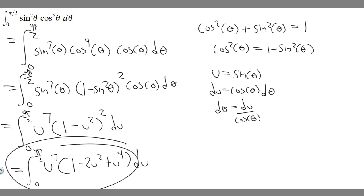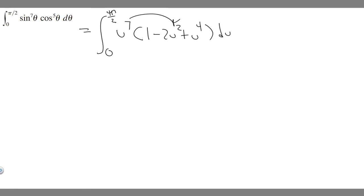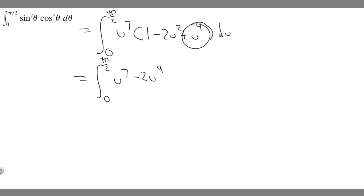Now we multiply u⁷ through: u⁷ · 1 = u⁷; u⁷ · (−2u²) = −2u⁹ (adding exponents 7+2=9); u⁷ · u⁴ = u¹¹. So the integrand becomes u⁷ − 2u⁹ + u¹¹ du. Now we just have variables to exponents and can take the antiderivative directly.